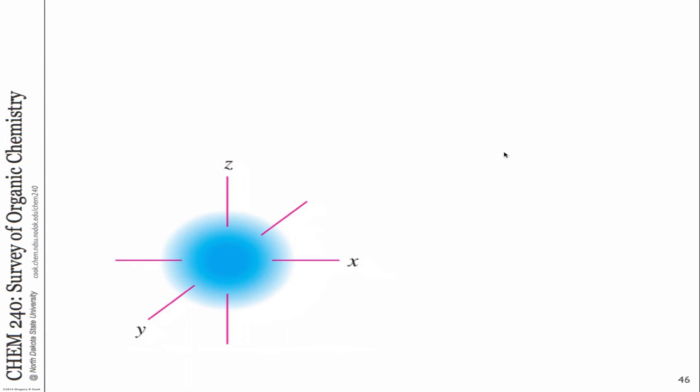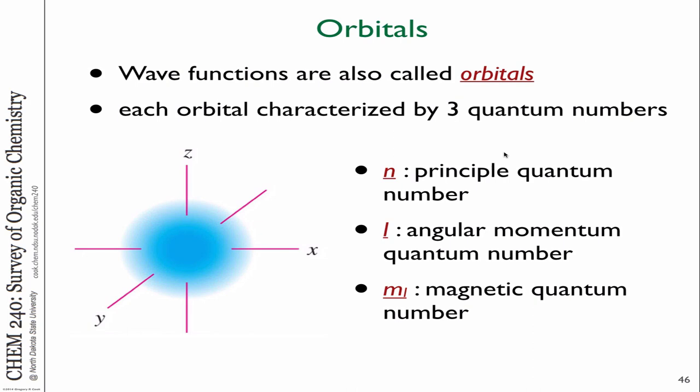Orbitals are wave functions defined by mathematics, and we have associated with an orbital a principal quantum number, which is essentially related to the energy shell. You probably learned about energy shells — the first, second, third energy shell — that's associated with the period on the periodic table. Angular momentum, magnetic spin — these are all concepts of atomic structure.